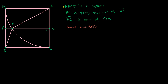Quadrilateral ABCD is a square, which tells us the four sides have equal length and all interior angles are 90 degrees. FG is a perpendicular bisector of BC — it's perpendicular at 90 degrees and also bisects BC, so both halves are equal. Arc AC is part of circle B, centered at B — specifically the bottom-left quarter of that circle. Given this, we need to find the measure of angle BED.